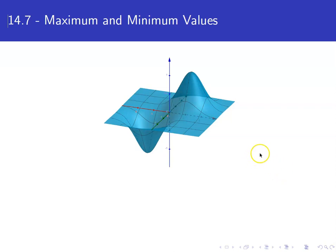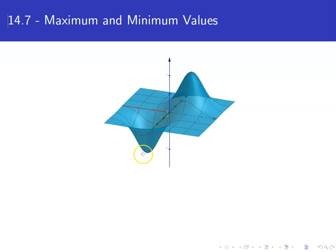Just looking at this picture of the surface, we see that we've got a top of a hill here. That would be what we would consider a local maximum. We can also look over here — we've got a nice little valley at the bottom. We would consider that a local minimum.